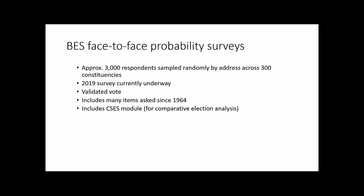A great advantage of the face-to-face surveys is validated votes — we match respondents to the electoral register and check whether they actually voted in the election. This gets around the social desirability bias of claiming to have voted. The probability surveys also include many items asked continuously since 1964, and they include the CSES — the Comparative Study of Electoral Systems module — which can be used to compare British data to many countries worldwide. If you're interested in that comparison, go to the CSES website for the combined file.